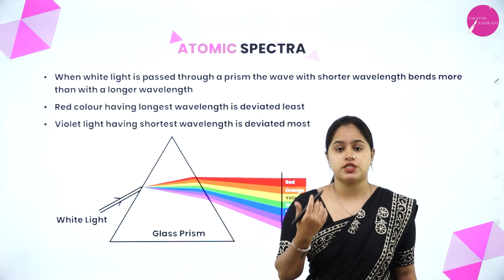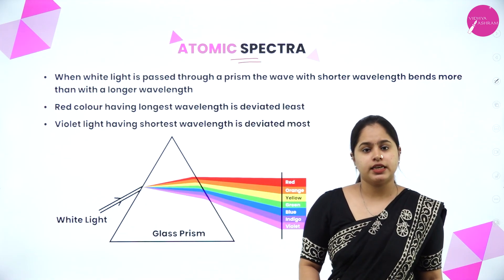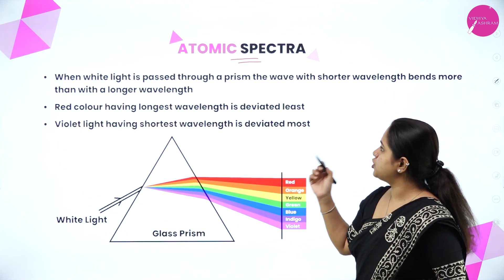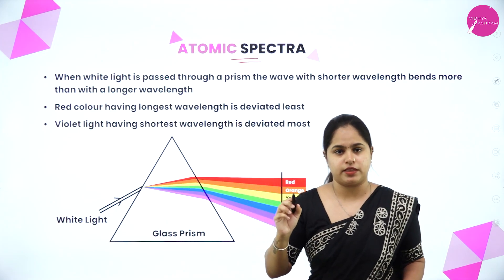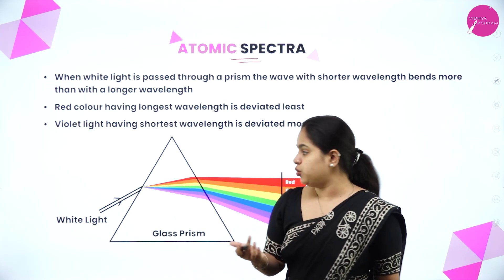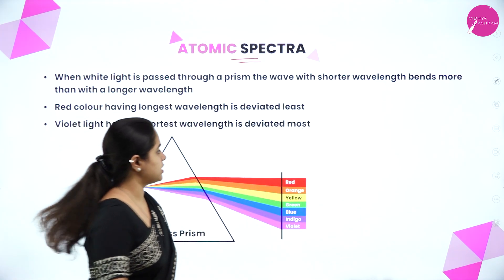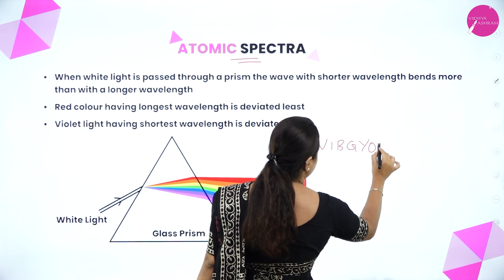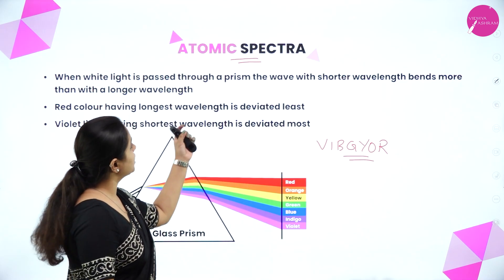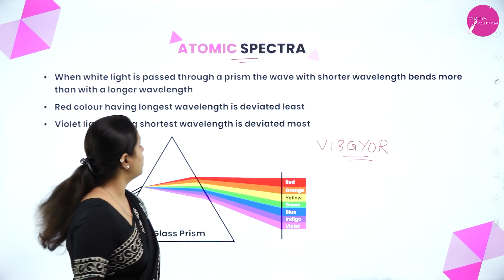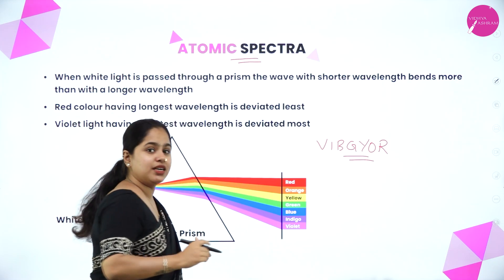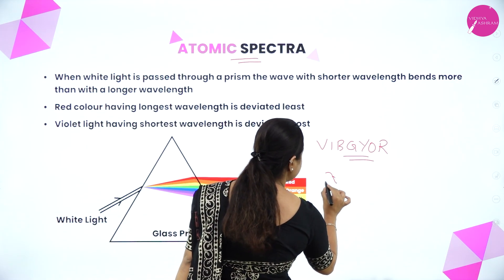Now moving on to the second development leading to the Bohr model of atom — that is atomic spectra. The word spectrum or spectra might be a little bit familiar. When white light is passed through a prism, the wave with shorter wavelength bends more than one with a longer wavelength. When white light is passed through a prism, you obtain these seven colors — VIBGYOR. The shorter wavelength one bends more than the longer wavelength one. The red color is the least deviated because it has the highest wavelength, meaning the lowest frequency.